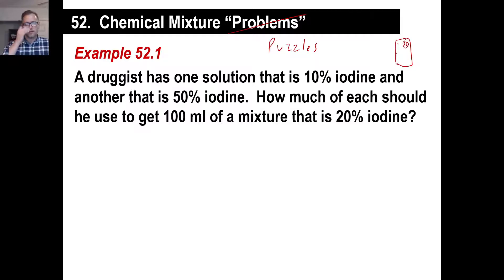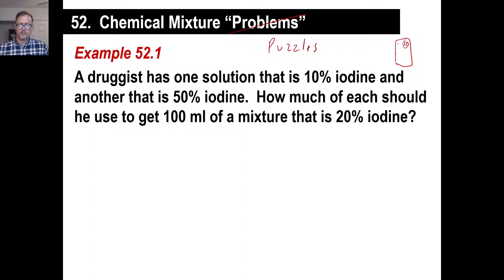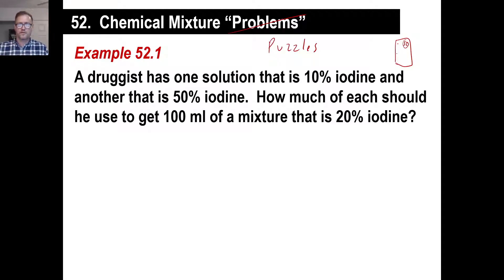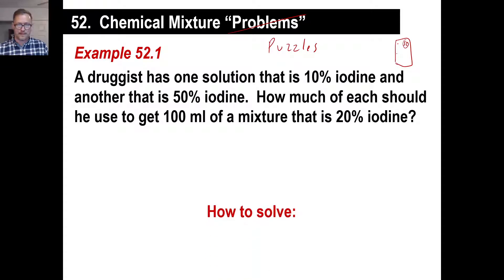There are only two steps to this one. A druggist has one solution that's 10% iodine and another that's 50% iodine. How much of each should he use to get 100 milliliters of a mixture that's 20% iodine? Looking at this at first — you've got iodine, you've got 10%, you've got mixtures, weird things like milliliters — but there is a method to do these, and once you know it, they are easy.